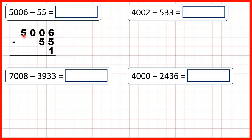So we go to the left again — 1 less, 1 in front — and then the same thing: 1 less than 10 is 9, and 1 in front. What we've done here is first exchanged one of our thousands for 10 hundreds, and then taken one of those hundreds and exchanged it for 10 tens.